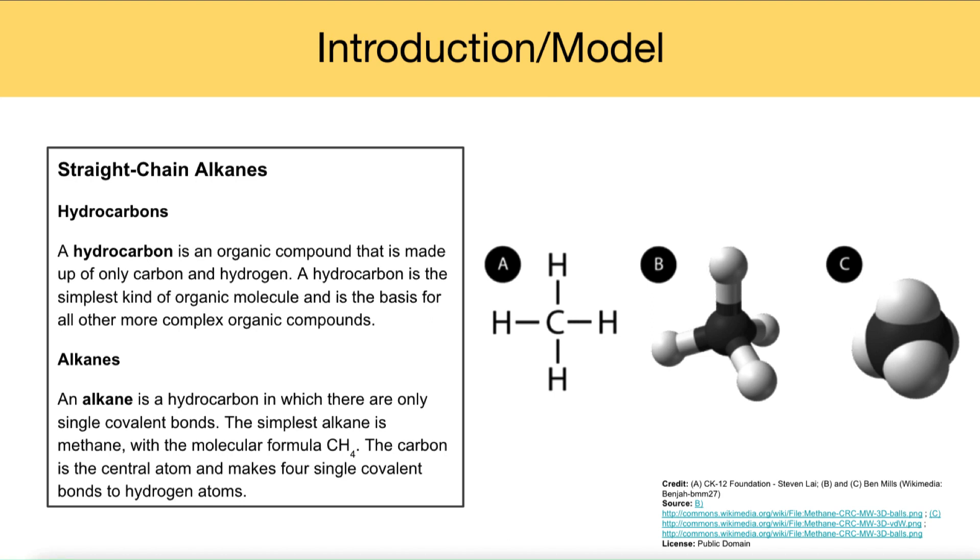An alkane is the simplest hydrocarbon. An alkane is a hydrocarbon where there are only single covalent bonds. The simplest alkane is methane with the molecular formula CH4. The carbon is the central atom and makes four single covalent bonds to hydrogen atoms.